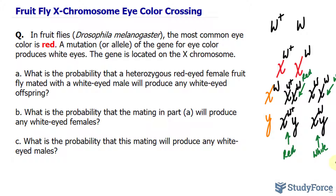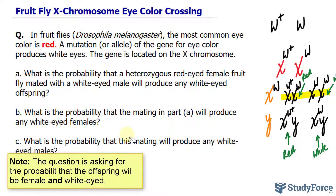In question B: what is the probability that the mating in part A will produce any white-eyed females? We already know that 2 out of the 4 potential offspring would be female, and of those 2, half of them will have white eyes. So the answer is a 1 in 2 chance — meaning 1 out of 4 total offspring will be white-eyed females.